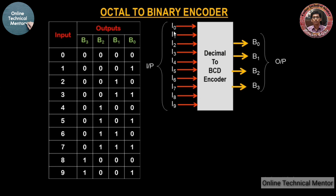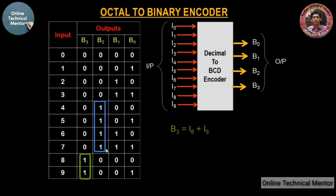Now let's derive the Boolean expressions for outputs b0, b1, b2, and b3. For an encoder, any one input goes high and you get the corresponding binary output combination. Starting with b3: looking at the truth table, only the last two rows are high — for inputs 8 and 9. So b3 = i8 OR i9. For b2, inputs 4, 5, 6, and 7 make b2 high, so b2 = i4 OR i5 OR i6 OR i7.